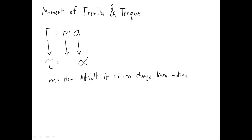Think of it like a big old 18-wheeler. It's got a lot of mass — very, very difficult to start it moving, very difficult to stop it moving, because it has so much mass. Difficult to change its motion. This rotational equivalent to mass — let's define it before we know what it is — it's going to be how difficult it is to change rotational motion.